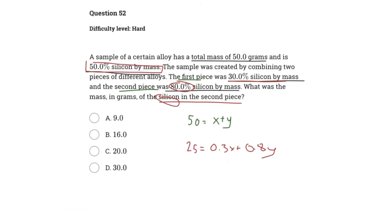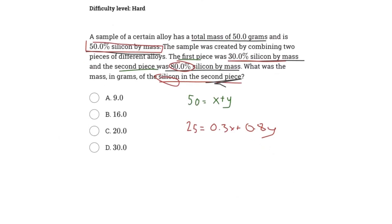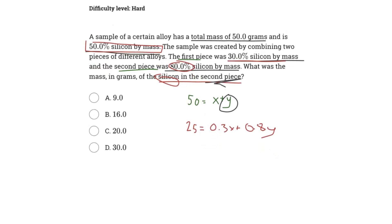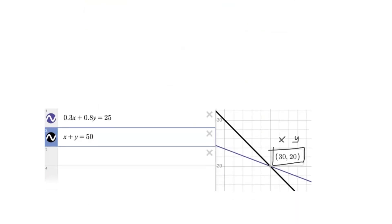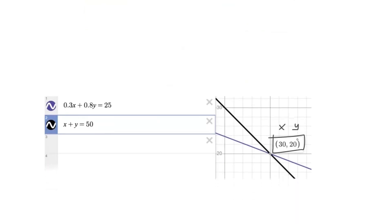It says what was the mass in grams of the silicon in the second piece. Now, we labeled y as the second piece, the total mass of the second piece, and so the total mass of the second piece here is, you can see, 20.